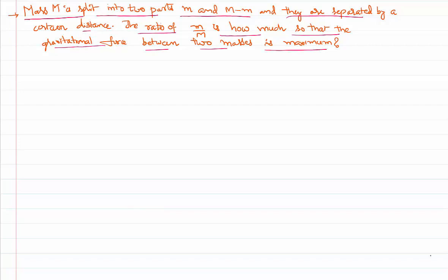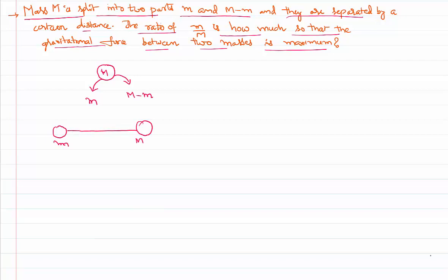Let's identify and try to solve the problem. This is what our mass M is. He is saying that we are dividing this mass into two parts. If one mass is small m, the remaining mass will obviously be capital M minus m. Now we are keeping small m at one place and the remaining mass, capital M minus m, at another place, separated by a certain distance.